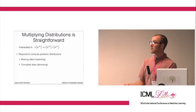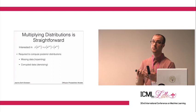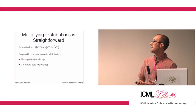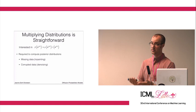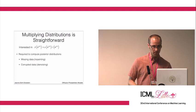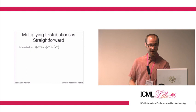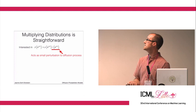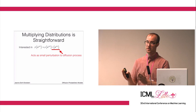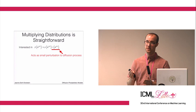Something else that is really neat about this approach to generative modeling is that it's quite simple to multiply distributions or compute posterior distributions in this framework. This is something that is difficult using many other techniques. The reason it's simple to do is that the second distribution you want to multiply by your distribution just acts as a small perturbation to each step in the diffusion process.